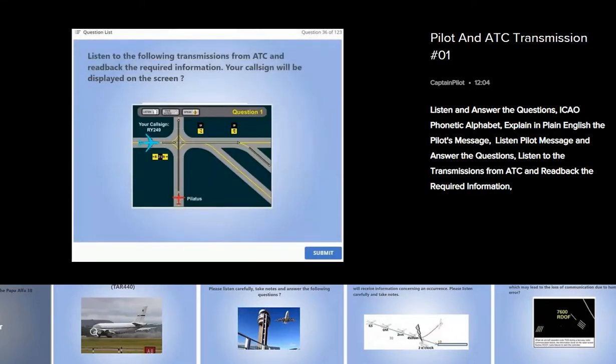Your call sign will be displayed on the screen. Romeo Yankee 249 hold before Zulu 1 intersection. Give way Pilatus on your right. After Pilatus continue taxi on taxiway Bravo. Take second turning right.